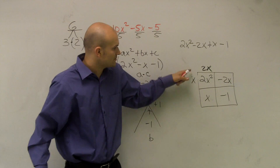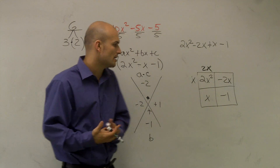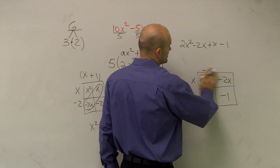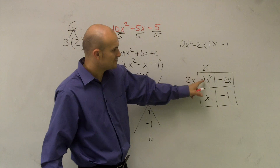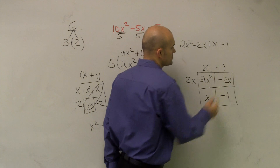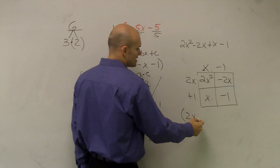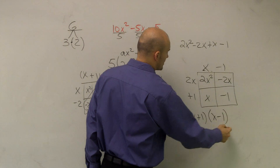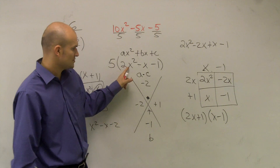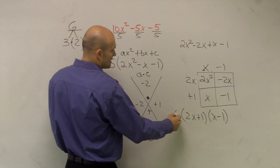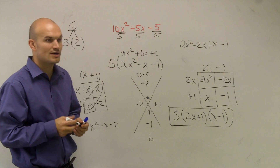With 2x and x along the sides, I ask: 2x times what gives negative 2x? That's negative 1. And x times what gives positive x? That's positive 1. So my two binomials are 2x plus 1 and x minus 1. Multiplying these out confirms: 2x times x gives 2x squared, and 1 times negative 1 gives negative 1. Then I bring back the 5, and the completely factored expression is 5 times the quantity 2x plus 1 times the quantity x minus 1.